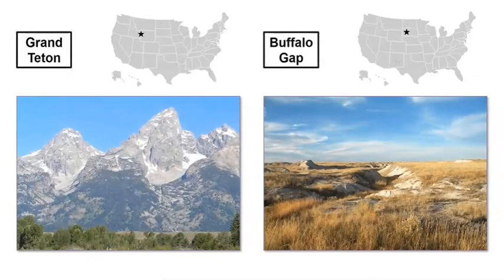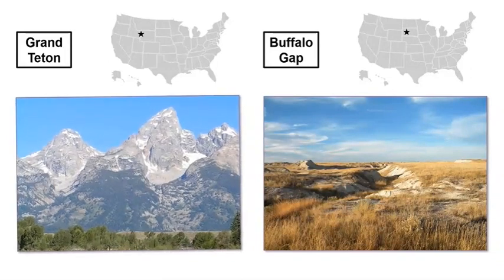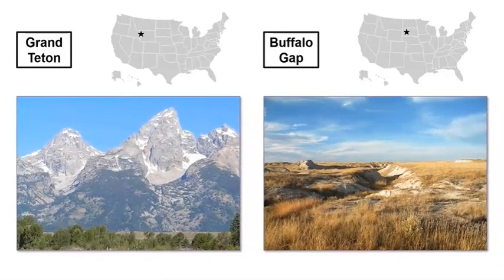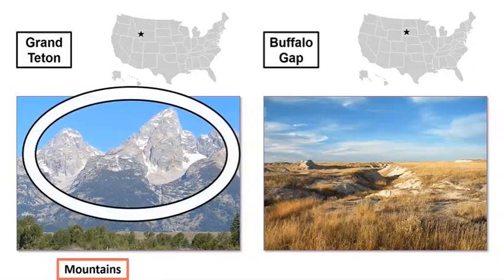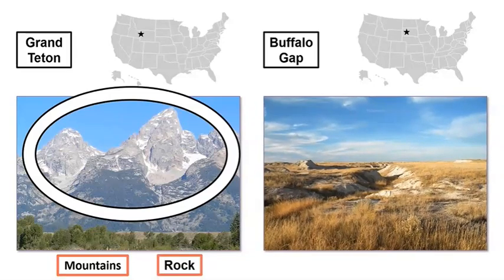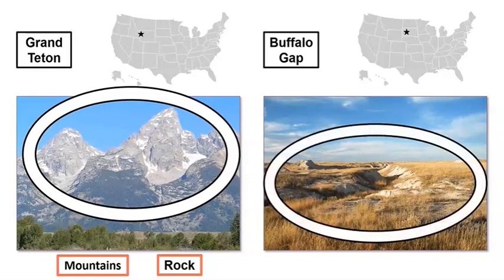Wyoming and South Dakota! Grand Teton National Park in Wyoming and Buffalo Gap National Grassland in South Dakota look very different from each other. We saw Grand Teton before — this part has lots of mountains. The mountains seem to be made of rock. I don't see any mountains at Buffalo Gap. Buffalo Gap looks flat to me. We call this kind of land Plains. Can you believe how different these two places look? I can't believe they are both in the United States!